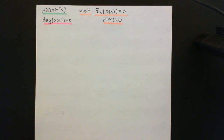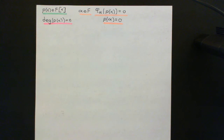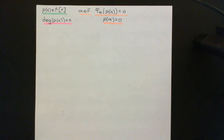There cannot be n plus 1 alphas which are different elements of the field such that they are all roots of this polynomial — i.e., when you apply the evaluation homomorphism for all of them to p of x, the answer is zero. It's not at all given that you will have n distinct roots; you might have none. This theorem only applies when we're talking about rings of polynomials over a field; for a more general ring, you can't say this is true.